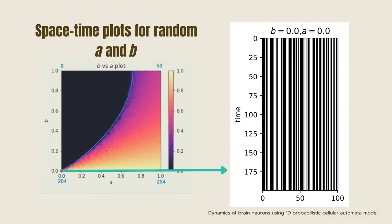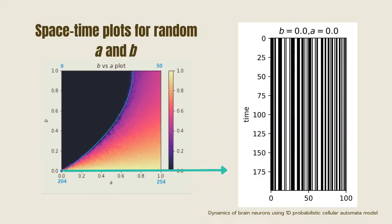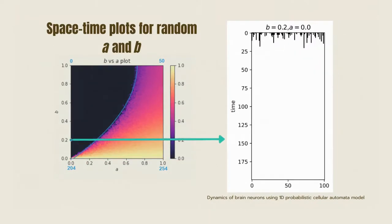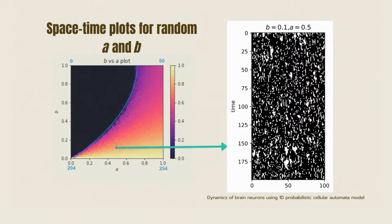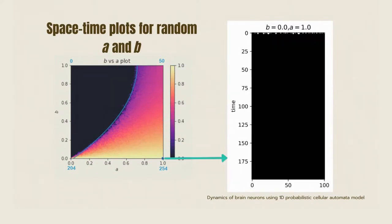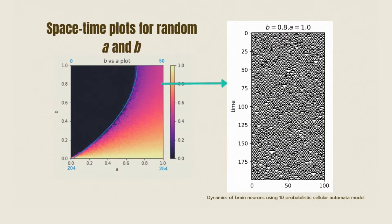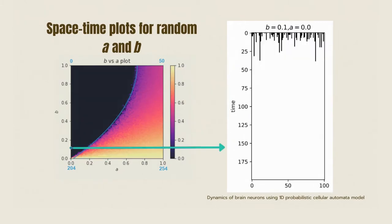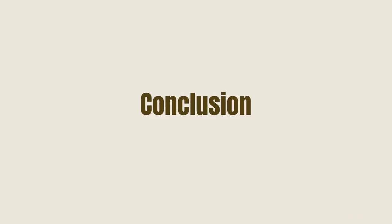Zooming in a little bit, we can see the individual space-time plots for random A and B values. You can see that there are B and A values where the initial grid extends up to the last time steps, such as when B and A are equal to 0.5.